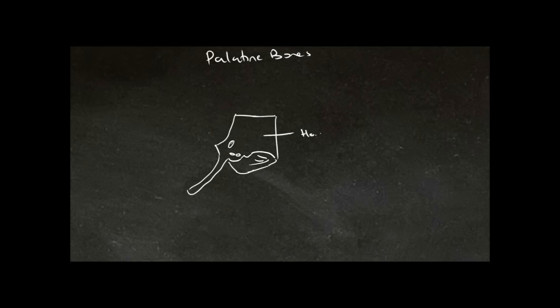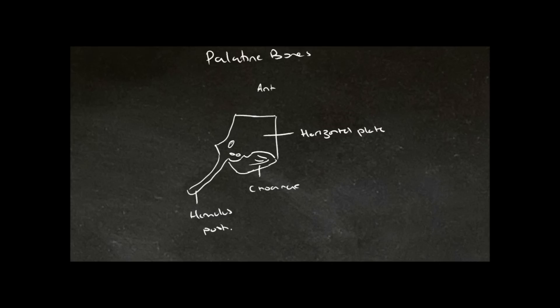We are looking at the horizontal part. The way to tell which is posterior and which is anterior is via this process at the back here — this is called the hamulus. Here we have the choana, or choanae in the plural, also referred to as the posterior nasal aperture.